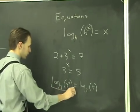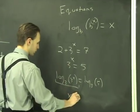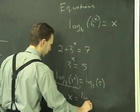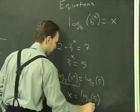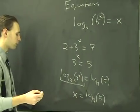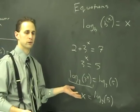This side, log base 3 of 3 to the X, we know that that's X equals log base 3 of 5. And that's the answer. We don't know what that is because we don't have a calculator, but algebraically, this is how it's solved.